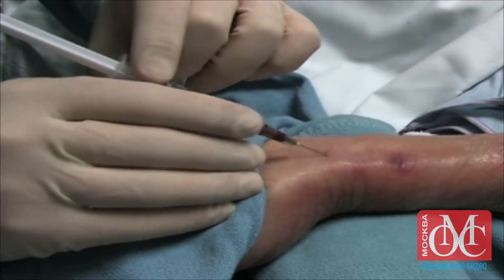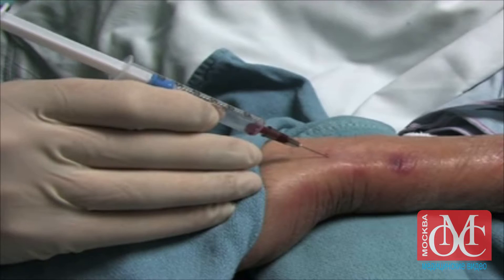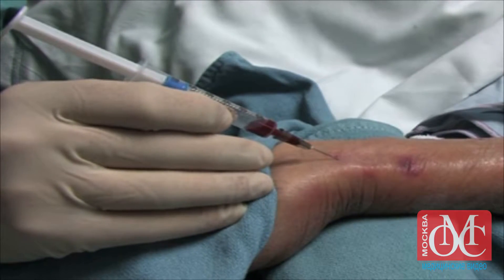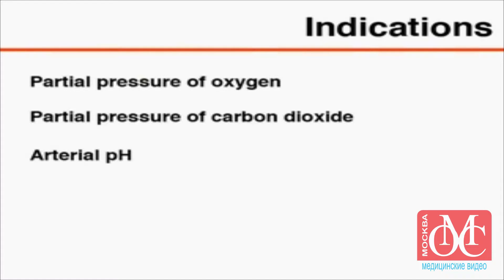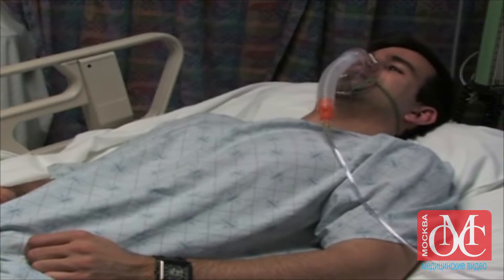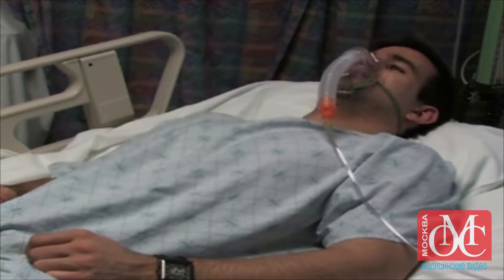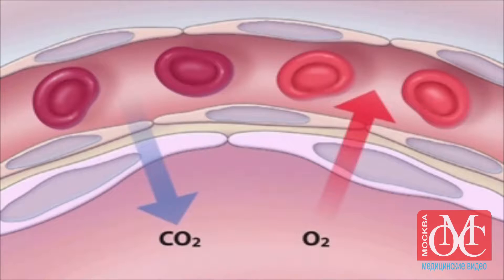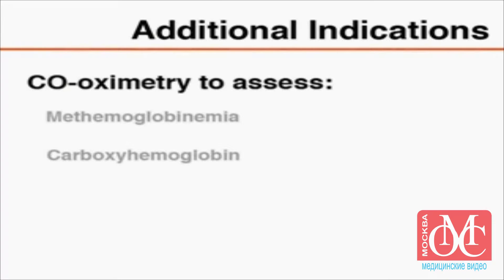Puncture of the radial artery is the preferred method of obtaining an arterial blood sample for blood gas analysis. The chief indication for measurement of arterial blood gas level is to obtain values for the partial pressures of oxygen and carbon dioxide and for arterial pH. This information is needed when assessing a patient with acute severe respiratory distress. Measurements of arterial pH and the partial pressures of carbon dioxide and oxygen provide accurate information on the status of acid-base balance and gas exchange. Another indication for arterial blood gas analysis is co-oximetry, in order to assess for methemoglobinemia and carboxyhemoglobin.